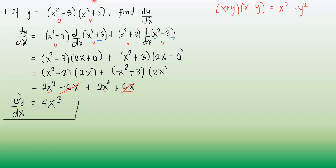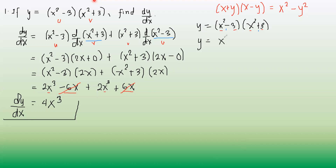Same with our example: y equals x squared minus 3 times x squared plus 3. Both have the same terms x squared and 3 — one is sum and the other is difference. So the result will be y equals x squared quantity squared, minus 3 quantity squared, giving us the difference of two squares. Squaring each: x raised to the 4th minus 9. So y is also equal to x raised to 4 minus 9.